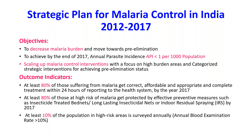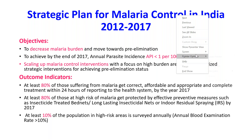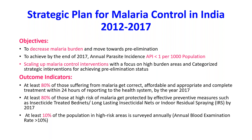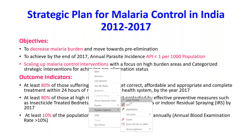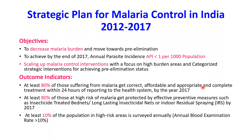The objectives for this plan were to decrease malaria burden, move towards the pre-elimination stage, and achieve an annual parasite incidence of less than 1 per 1,000 population by end of 2017. The outcome indicators were that at least 80 percent of those suffering from malaria receive correct, affordable, and complete treatment within 24 hours; at least 80 percent of those at high risk are protected by ITBNs or LLINs or indoor residual spraying; and at least 20 percent of the population in high risk areas is surveyed annually, meaning the annual blood examination rate should be more than 10 percent.